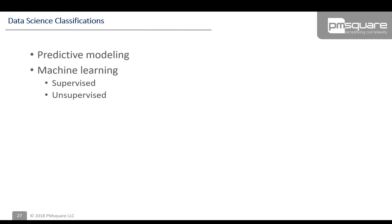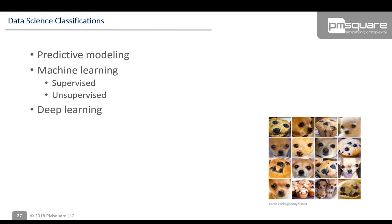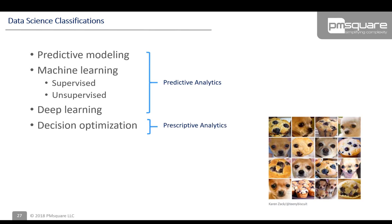Deep learning — synonymous with neural networks or artificial neural networks — is inspired by the human brain. It uses layered algorithms, one on top of another, allowing for even more complex calculations, including things like image recognition, which is the primary current application for deep learning. Decision optimization is the prescriptive piece: the first few types — predictive modeling, machine learning, deep learning — are all considered predictive analytics, while decision optimization is prescriptive.